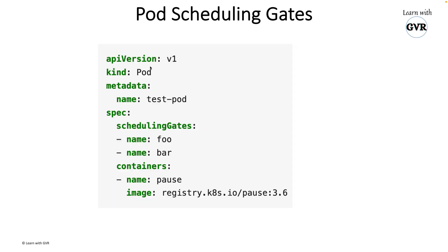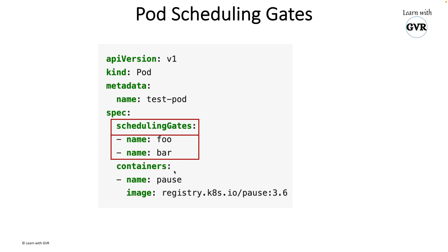In a pod definition, under the spec, there is a new field called schedulingGates. You specify conditions as an array of key-value pairs. Only when all specified gate conditions are matched will the pod be scheduled into the cluster.